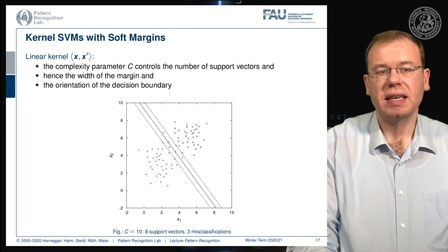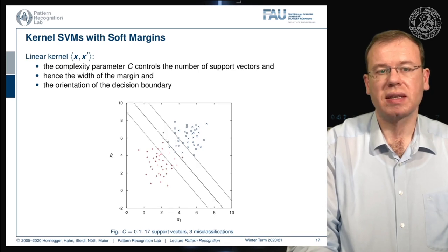And if we vary c, then you see that the number of support vectors is increased. And so also our decision boundary changes.